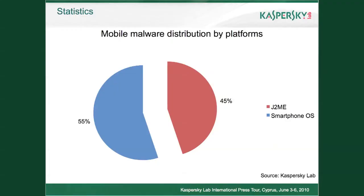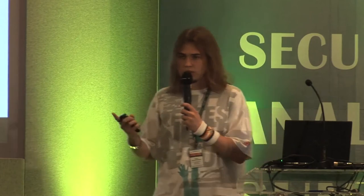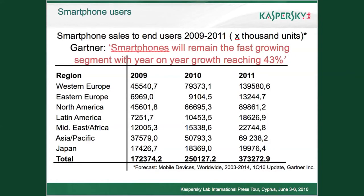After Brador, for three years there were no examples of mobile malware using the internet. But the situation changed in 2008. If we merge all smartphone platforms, we see that 55% goes to all smartphone OSs and 45% to Java. Among that 55%, between June 2009 and the current moment, 35% of all newly discovered smartphone malware used the internet. According to Gartner research, in all regions, for two years, the number of smartphones continued to grow.